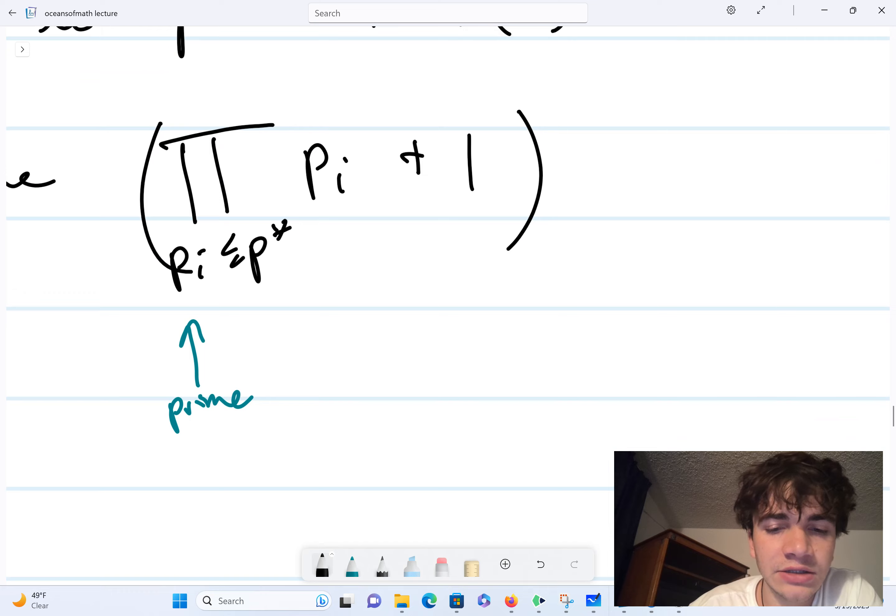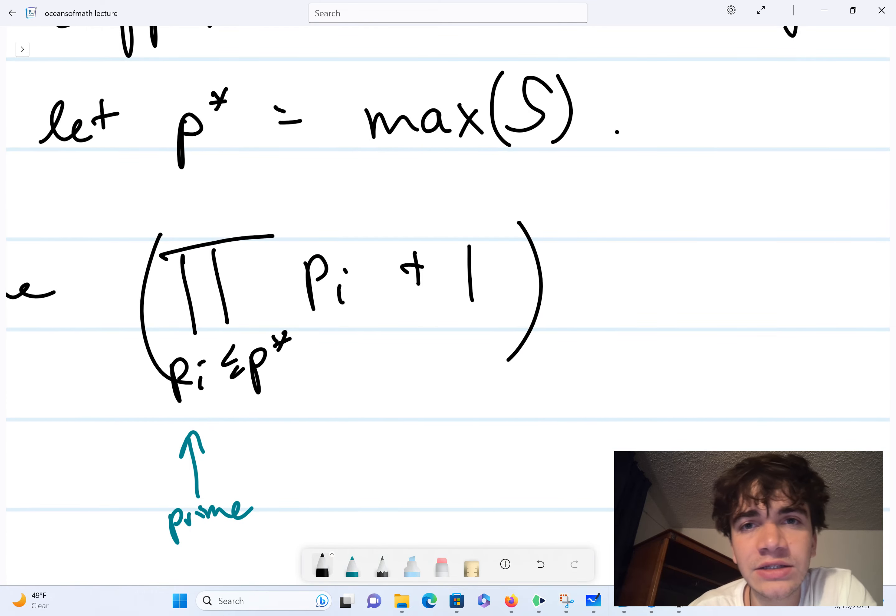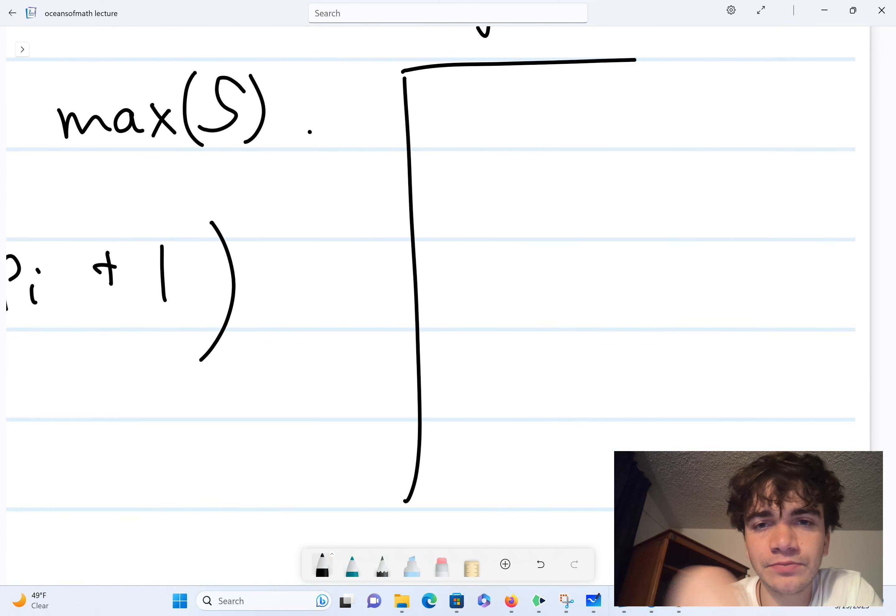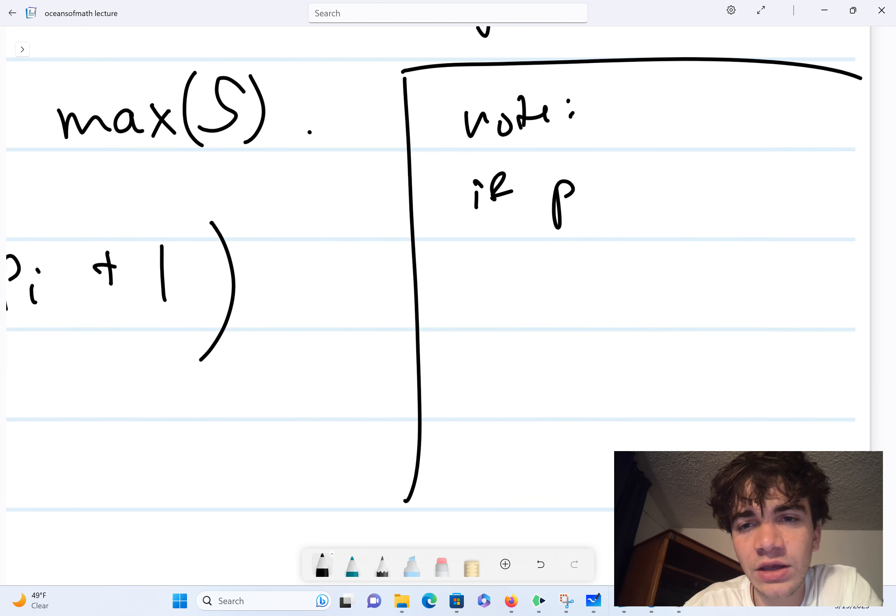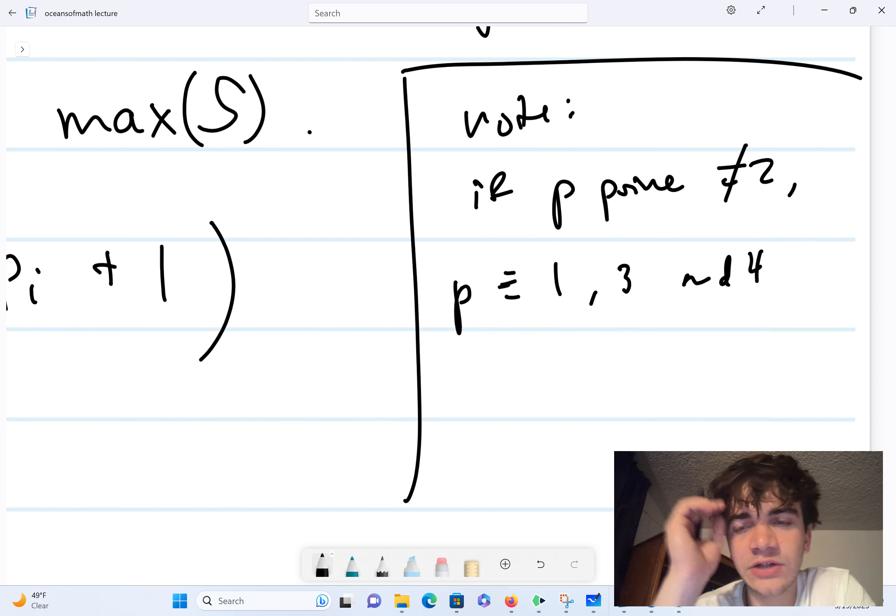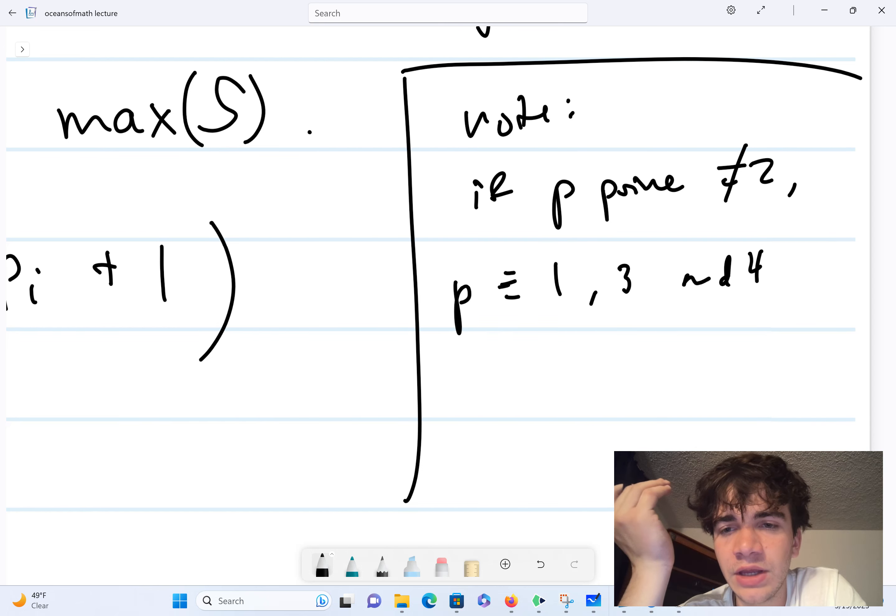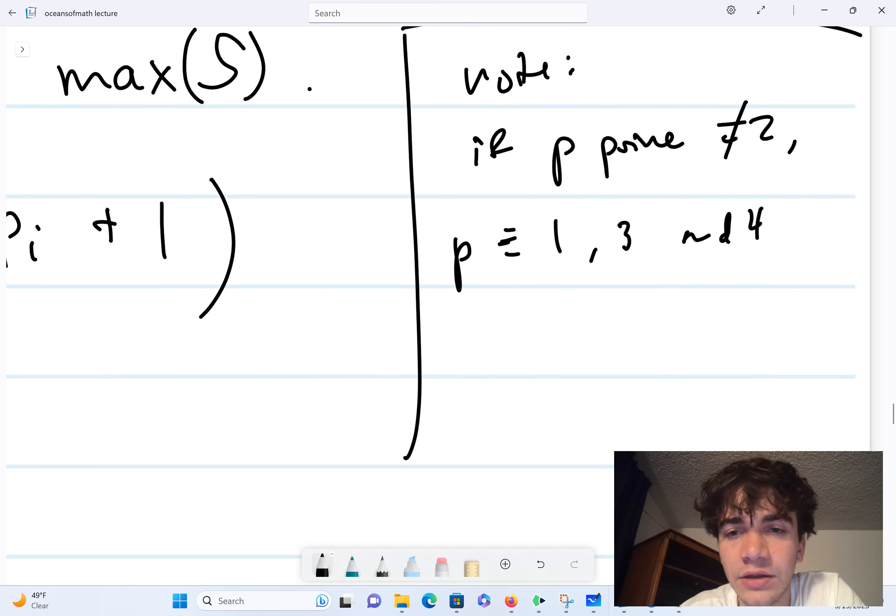Now notice that, you know, any prime that isn't 2. So a little side note here. If p prime is not 2, then p is equivalent to 1 or 3 mod 4. And that's just because it can't be even. Like any other, if it's equivalent to 0 or 2 mod 4, it's an even number, which is all primes besides 2 are odd. They don't have 2 as a factor.